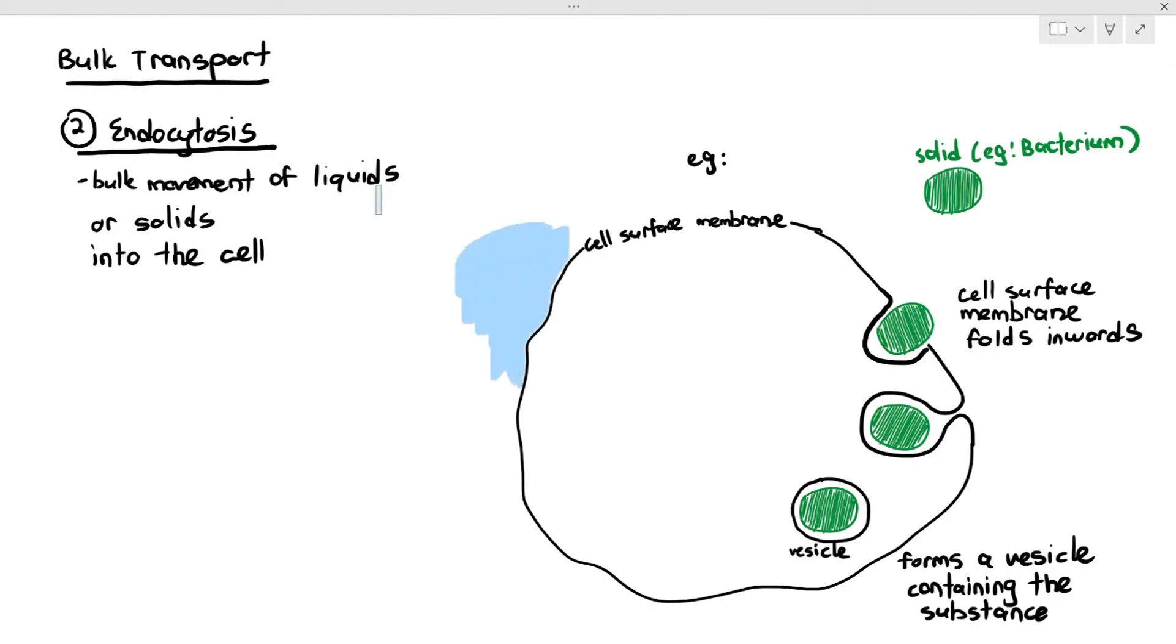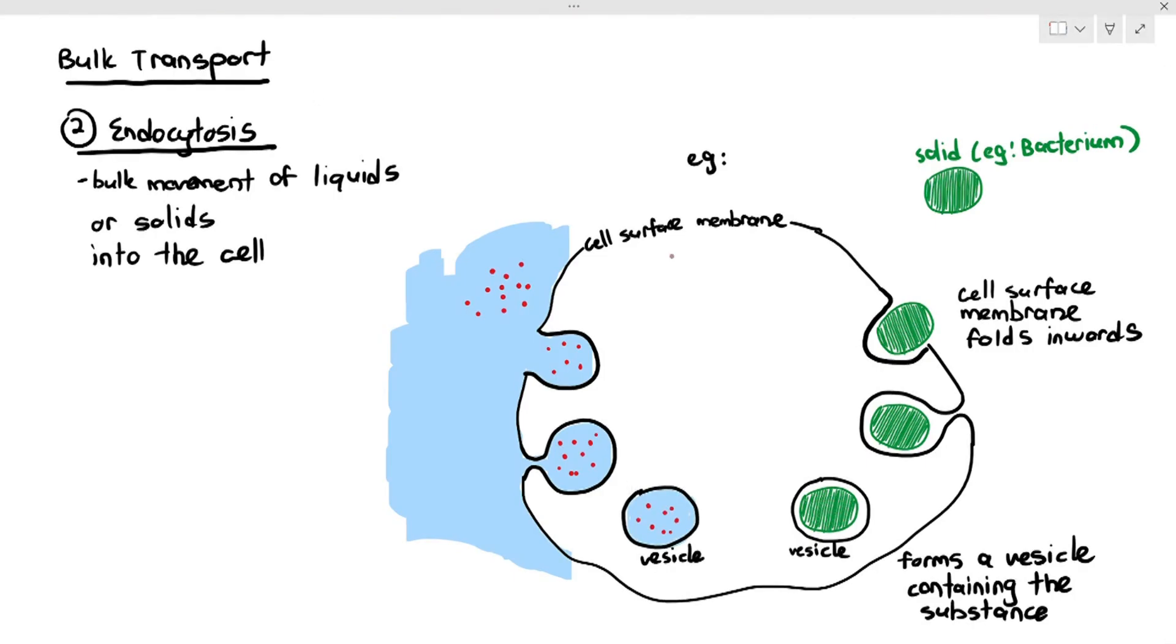Another way endocytosis can happen is, sometimes my cell may require an extra amount of water and dissolved substances. So again, same thing, the cell surface membrane falls inwards, and it will suck in the water and the dissolved substances represented in the red dots, and then it forms a vesicle inside the cell. That's basically it. You have to understand that your cell surface membrane is a very fluid and flexible structure. So it's able to fold and change its shape to form a kind of mouth to take in the external substances, whether it's solid, like the bacterium, or liquid, like water and dissolved substances.